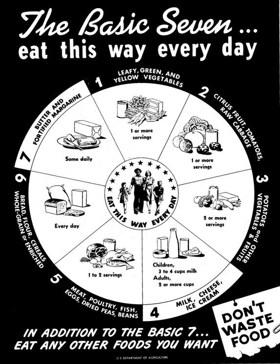A food pyramid or diet pyramid is a triangular diagram representing the optimal number of servings to be eaten each day from each of the basic food groups. The first pyramid was published in Sweden in 1974. The 1992 pyramid introduced by the United States Department of Agriculture was called the food guide pyramid. It was updated in 2005, and then replaced by MyPlate in 2011.